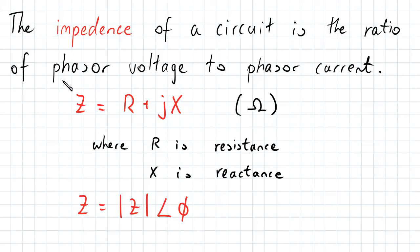And so as such, it is given by the terms R plus jX, where R is the resistance, and the resistance is the real part of the impedance.